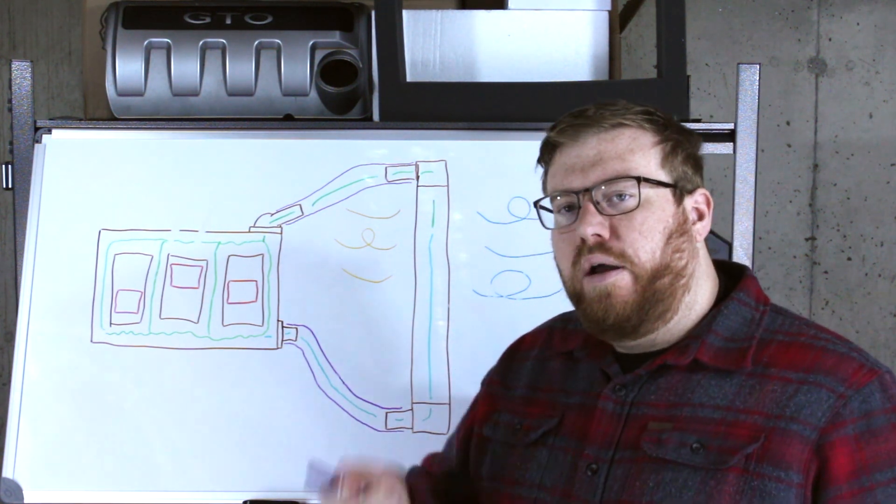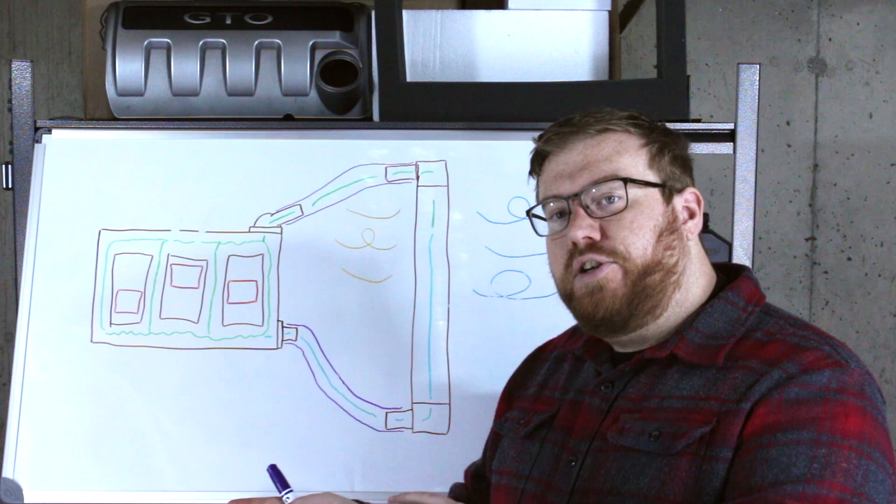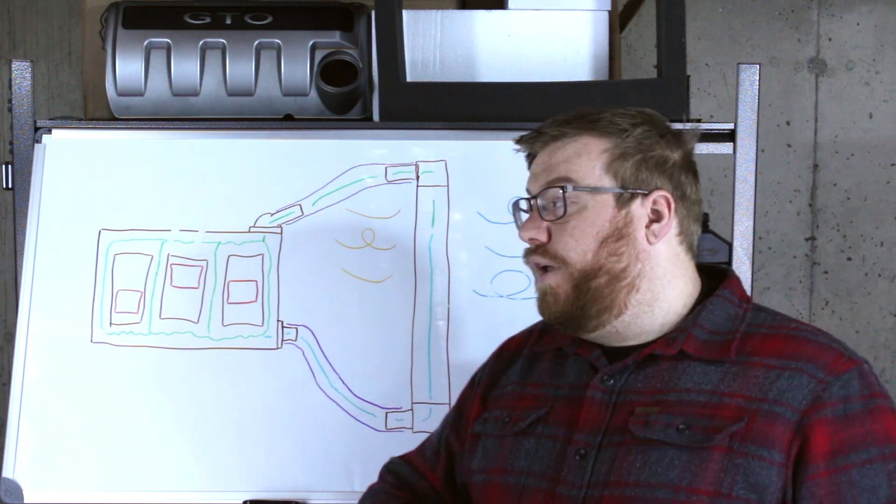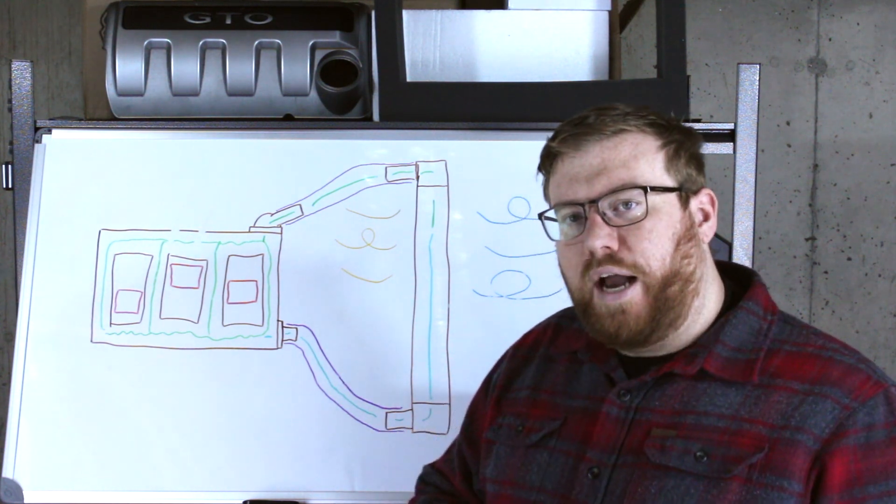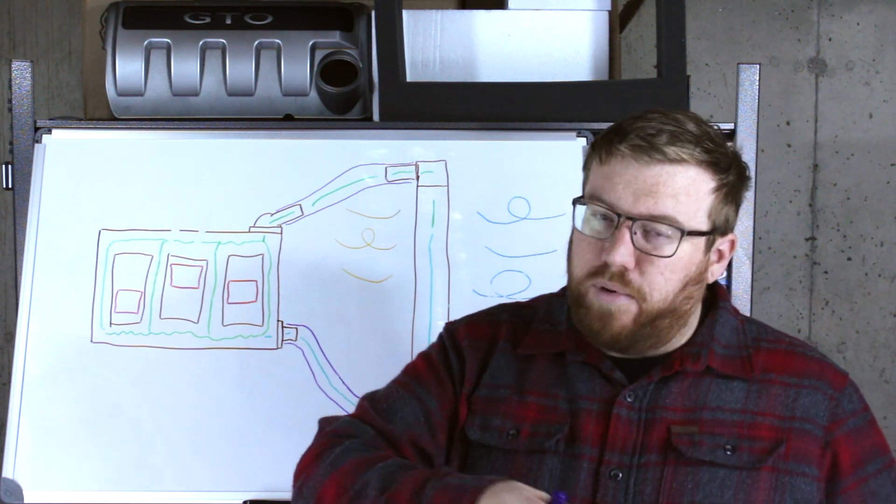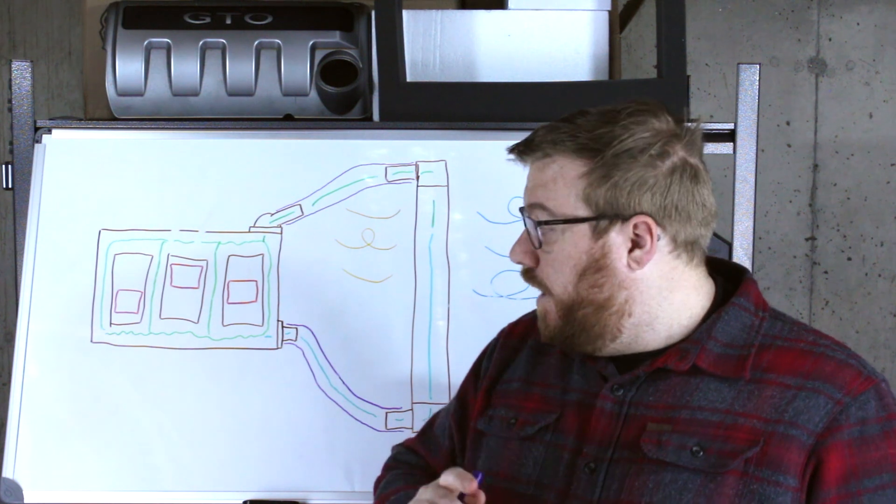So now on to our third method: putting exhaust back into the engine via the intake. So normally when the engine is running, it's drawing in air from the outside and that air is about 21% oxygen. If you happen to know the exact number, let me know in the comments below.